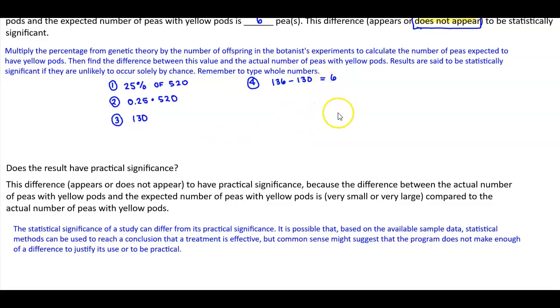So this difference of 6, we would say, does not appear to have practical significance because the difference between the actual number of peas with yellow pods and the expected number of peas with yellow pods is very small compared to the actual number of peas with yellow pods.